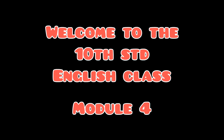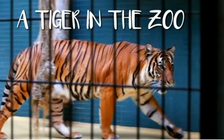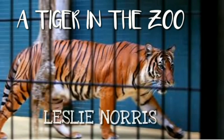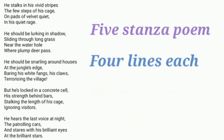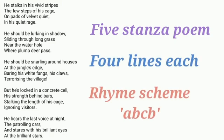Welcome to the last module of this poem. In this module, I will be explaining the literary devices used in this poem. As you all know, the poem comprises 5 stanzas, each stanza consists of 4 lines, and the rhyme scheme followed in all these stanzas is A, B, C, B.